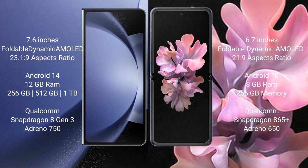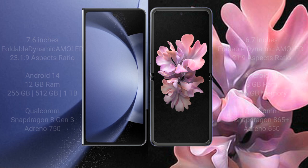The Samsung Galaxy Z Fold 6 comes with 12GB RAM and 256GB, 512GB, or 1TB internal storage, powered by a Qualcomm Snapdragon 8 Gen 3 processor with an Adreno 750 GPU. The Samsung Galaxy Z Flip 6 comes with 8GB RAM and 256GB internal storage, powered by a Qualcomm Snapdragon 865 Plus processor with an Adreno 650 GPU.